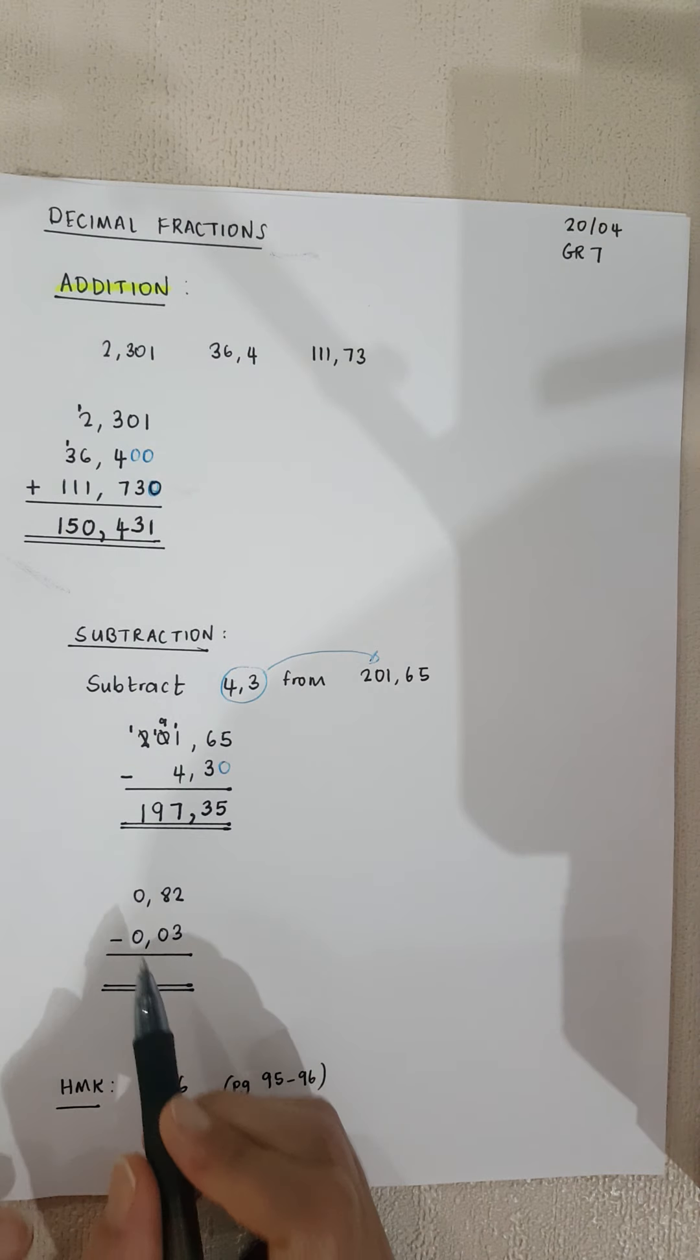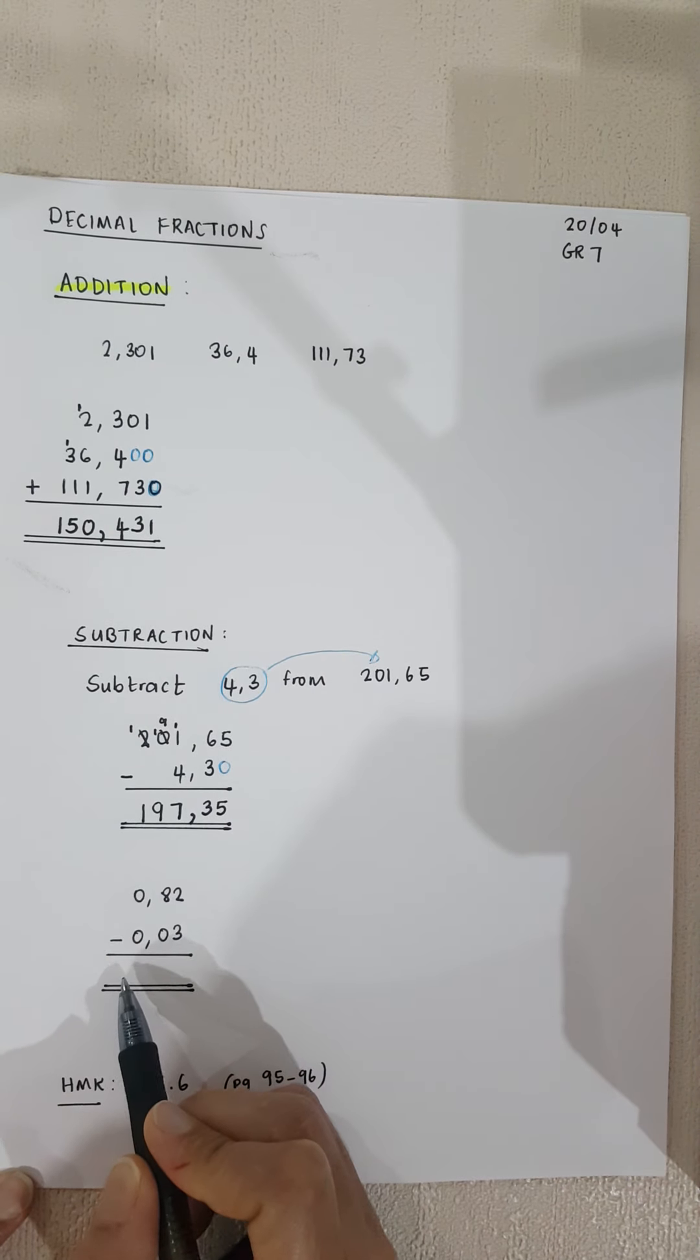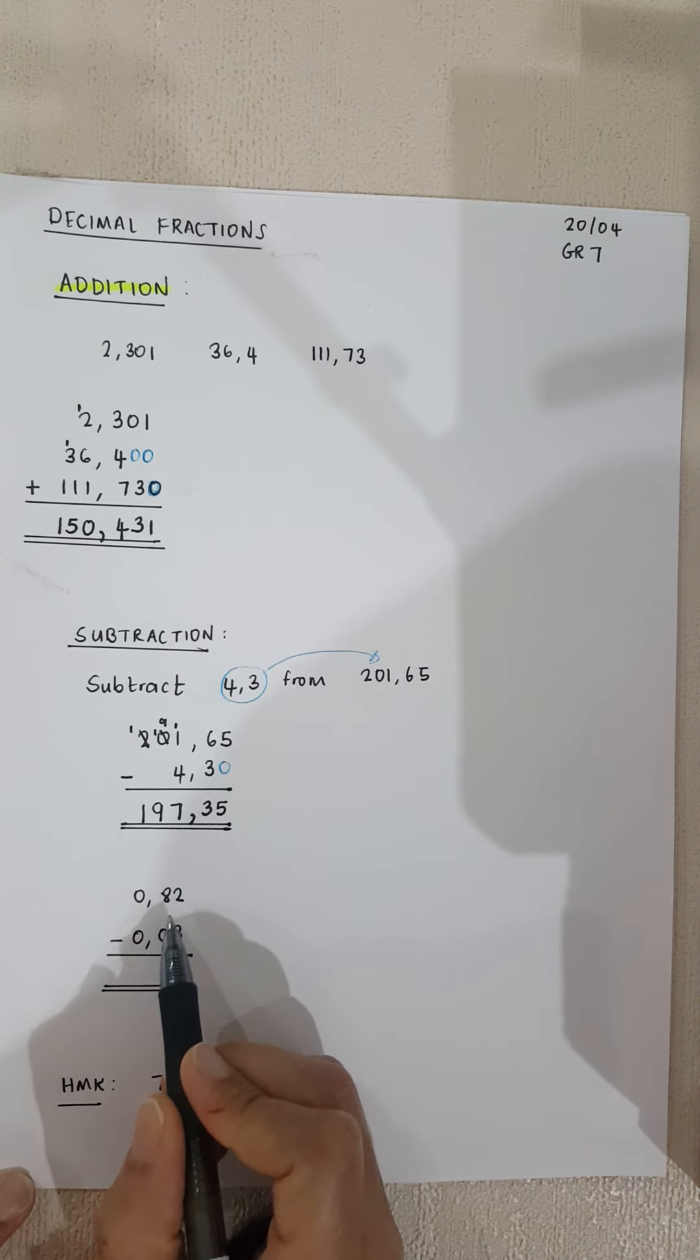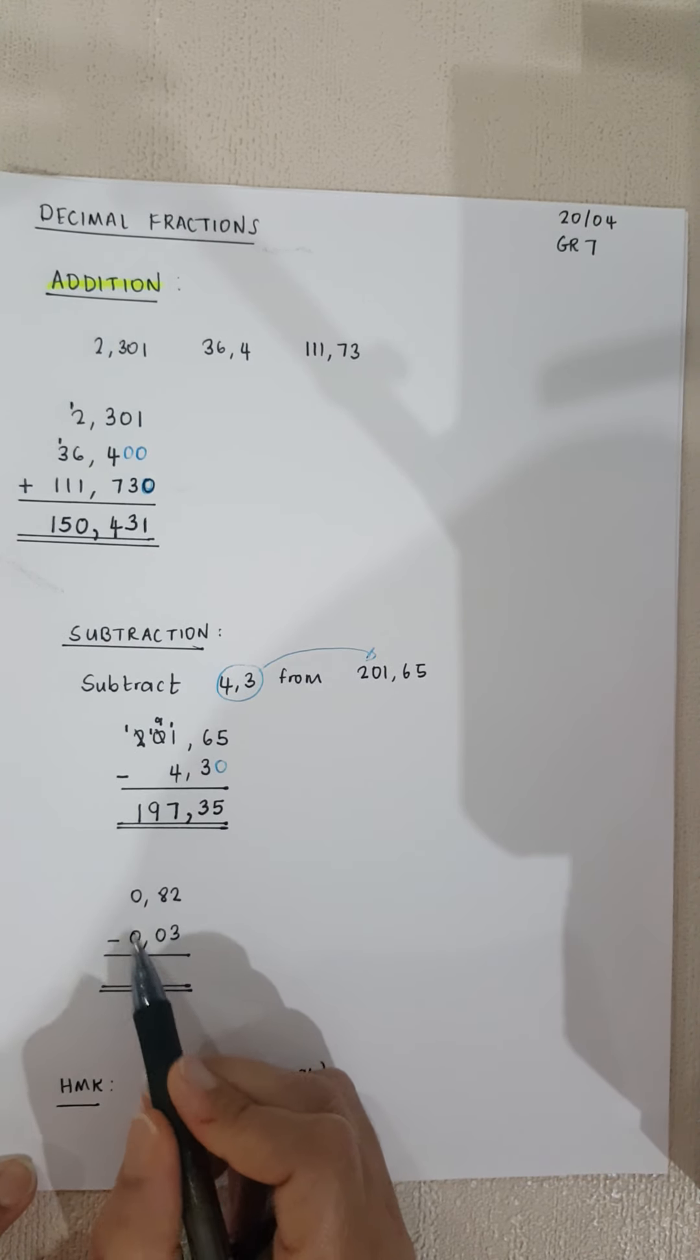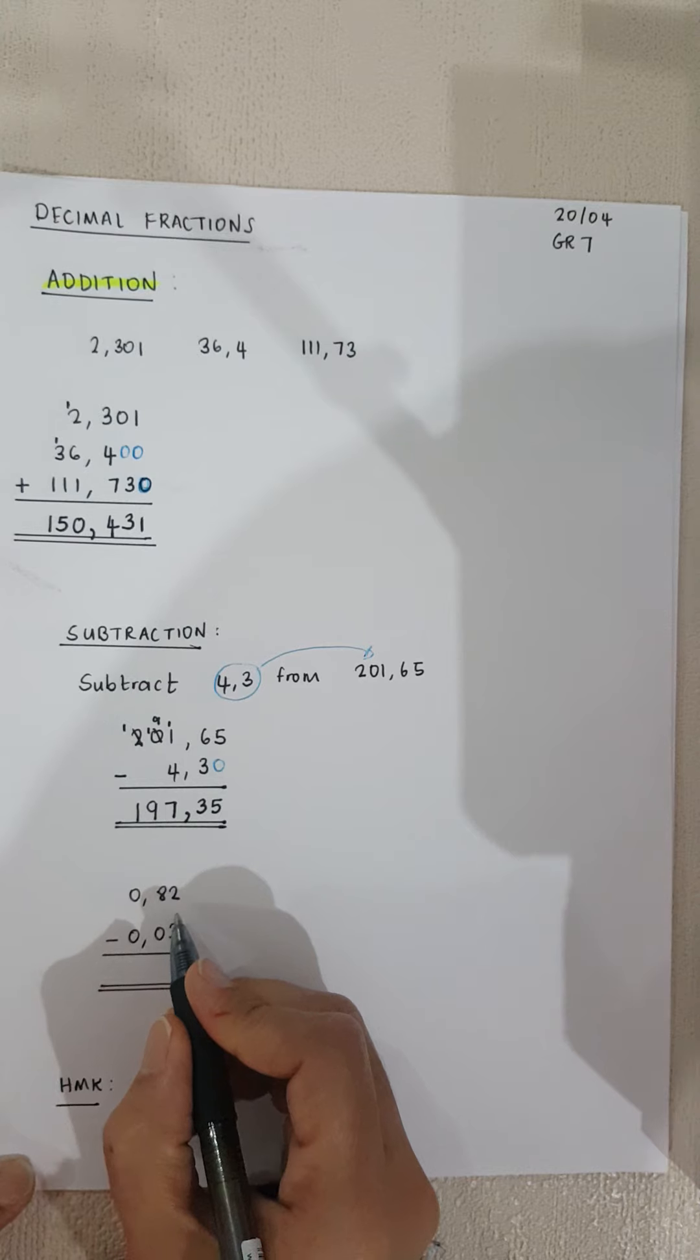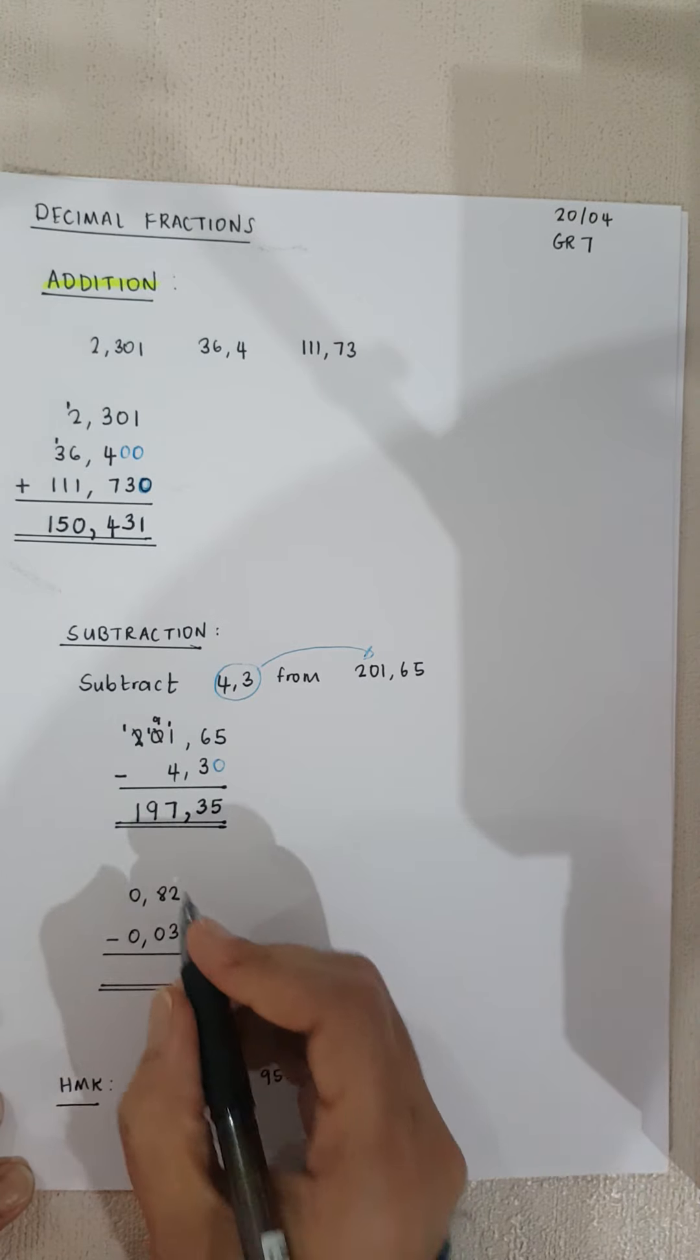Let's do the next one together. We've got 0.82 minus 0.03. Look how I've written the question down, it's all placed in order and I've got the comma there. So 2 minus 3, I can't minus 3.